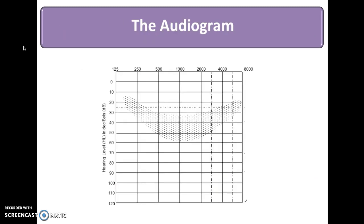This is an audiogram, and on the horizontal axis, we have frequency or pitch represented. During an audiological evaluation, we evaluate hearing between 250 and 8,000 Hertz. Our ears can hear many more frequencies than that; however, for the audiological evaluation, we test between 250 and 8,000 Hertz.